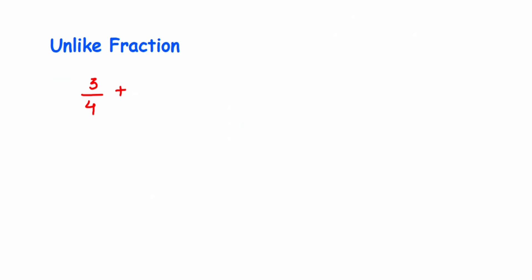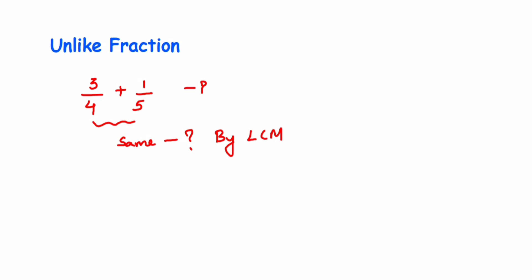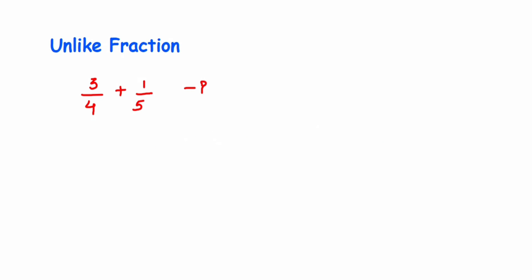For unlike fractions, things are different because the denominators are different. Suppose we have 3/4 and 1/5 — how do we solve this? We need to make the denominators the same so they become like fractions. To do that, we take the LCM of the denominators and then change the numbers. LCM of 4 and 5 is 20.